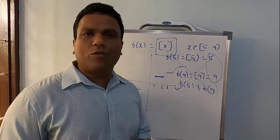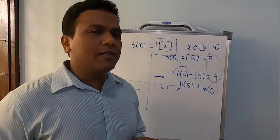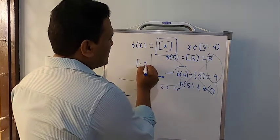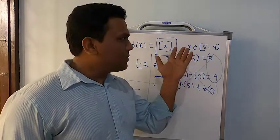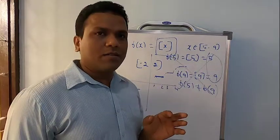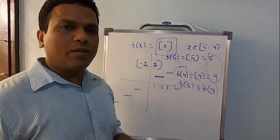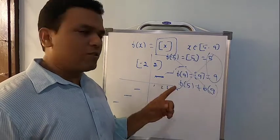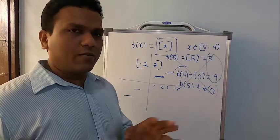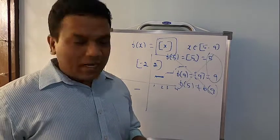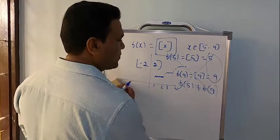The second problem is based on the same method — just repeat the same thing. f(x) = greatest integer of x, only the interval is changed to [−2, 2]. It doesn't make a difference. Still it is going to be not continuous in the closed interval [−2, 2]. Not continuous, not differentiable — that's enough. About problem number three, you can work it out yourself.